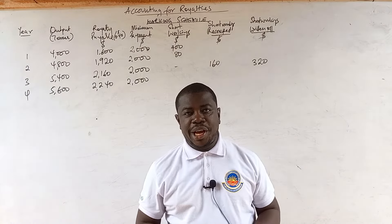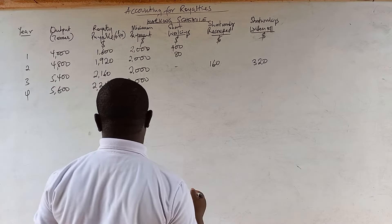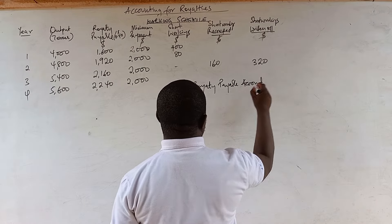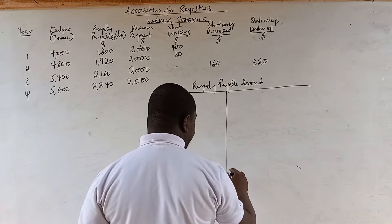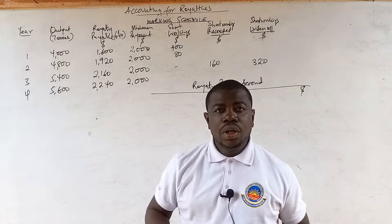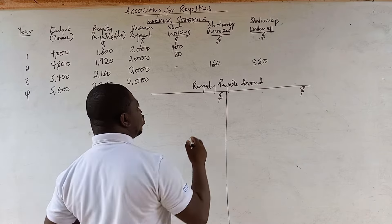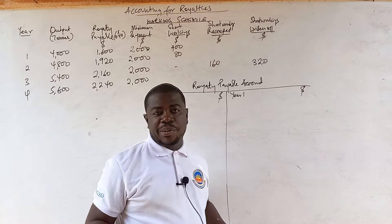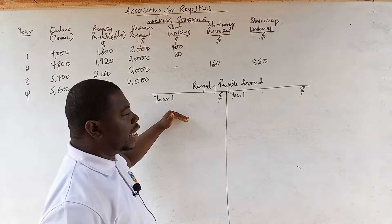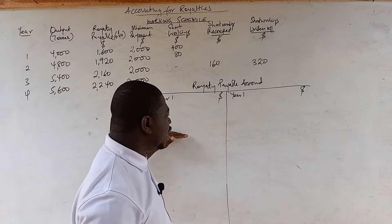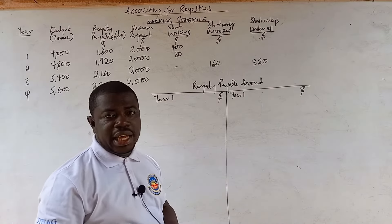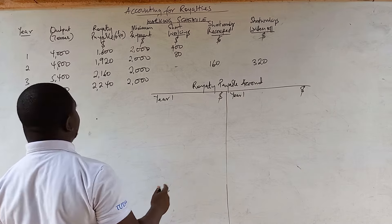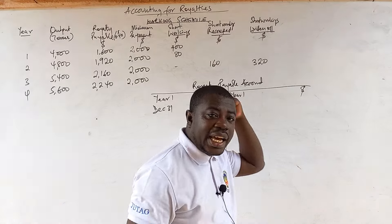The Royalty Payable Account is an expense account — similar to the bad debt account in receivables. You indicate the expense on the debit side and write it off to the income statement. There are no balance carry-downs on this account. All entries are made on 31 December. In Year 1, we debit de-Homaji $1,600 (the royalty payable), because we are crediting de-Homaji's account.